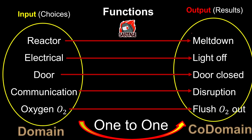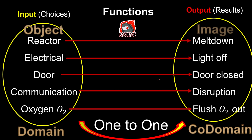Now we're going to learn a few terms for this chapter. The first term is domain — it means the set of choices that we have. Since it is a set, when they ask for the domain you write it in set notation. For instance, the domain is the set that consists of reactor, electrical, door, communication, and oxygen. The codomain is the set of all possible results, so remember to write it in set notation as well.